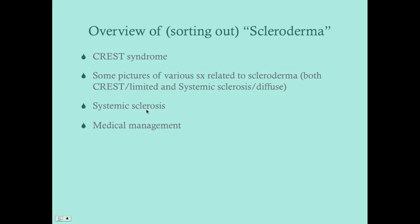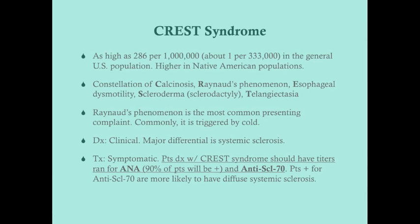CREST syndrome affects as high as 286 per million — about 1 per every 33,000 in the general US population — so it's a pretty rare disease. It's higher in Native American populations. CREST syndrome is the constellation of Calcinosis, Raynaud's phenomenon, Esophageal dysmotility, Scleroderma (generally confined to the fingers and toes, technically sclerodactyly), and Telangiectasia.